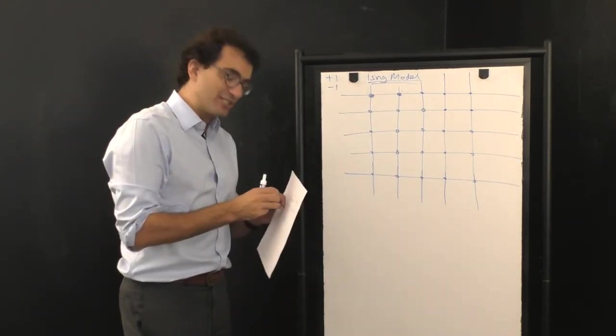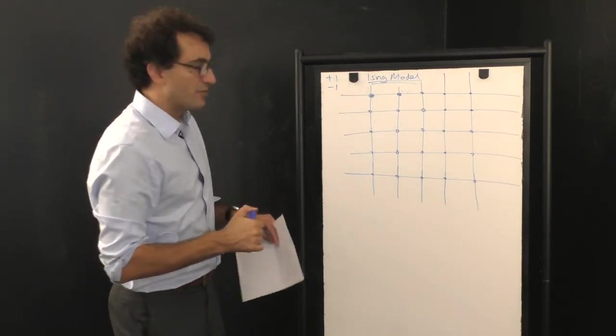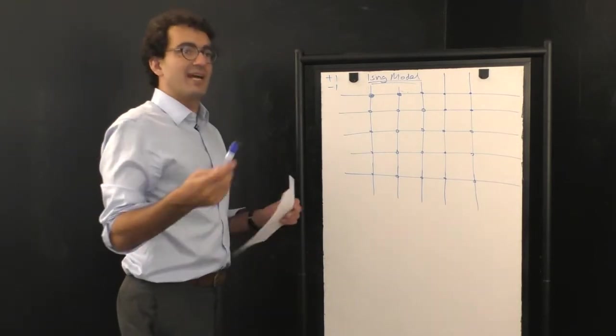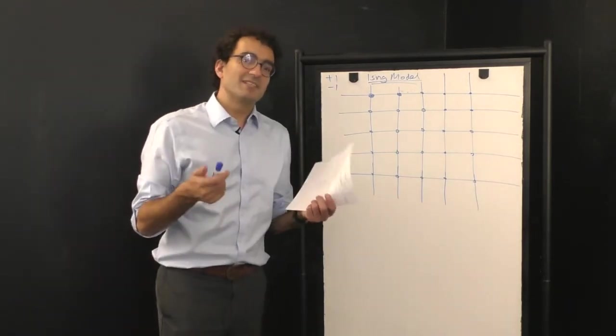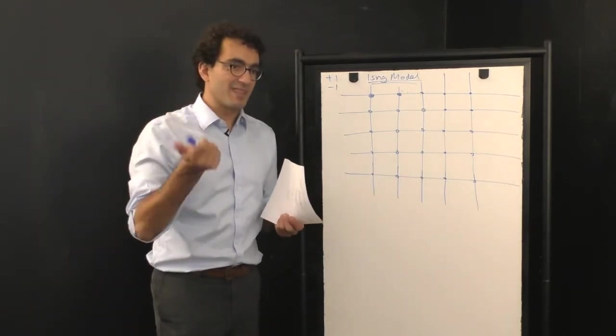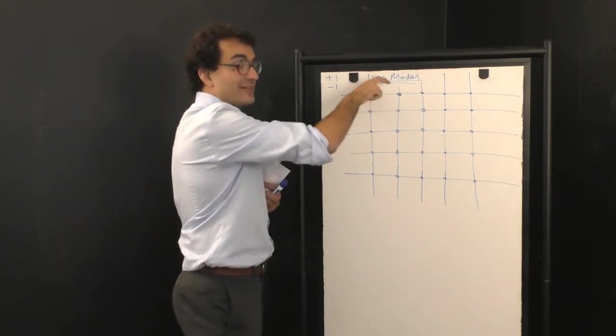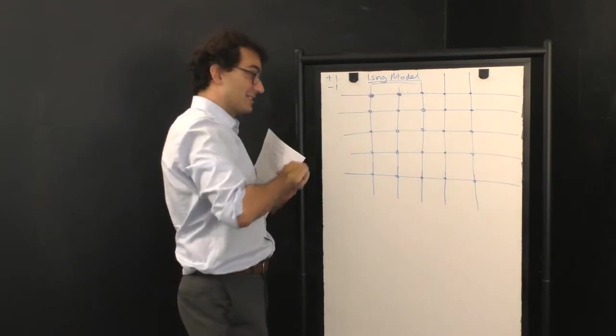Instead, what we say is that there's a general propensity for neighbors to find themselves in the same state. And the Ising model is just a fancy phrase for the exact mathematical specification of how things that are near each other want to act like each other.